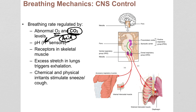You also have receptors in skeletal muscles. If you start exercising, they stimulate faster breathing because you're anticipating being low on oxygen and making more CO2 soon. Breathing can also be inhibited by stretch in the lungs — if your lungs feel too full after a very deep breath, you get that uncomfortable feeling, which basically stops you from over-contracting the muscles and doing damage.